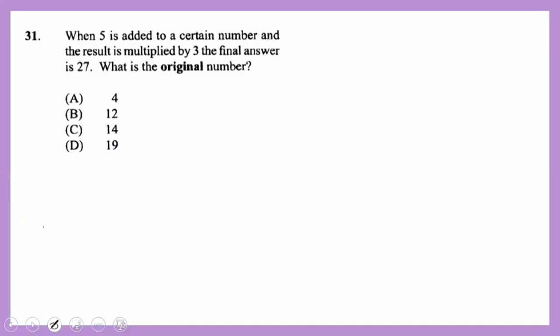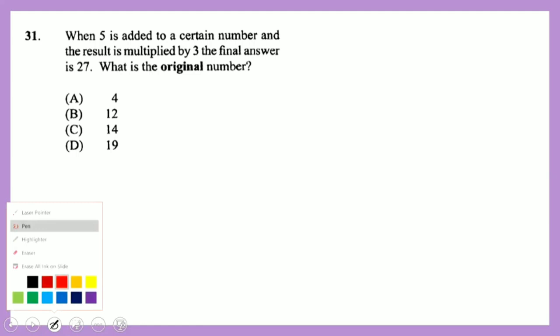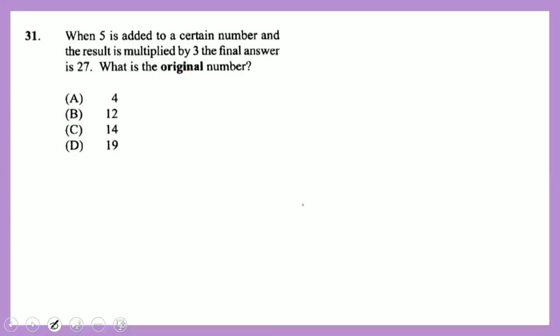Question 31: when five is added to a certain number and the result is multiplied by three, the final answer is 27. We write this using mathematical symbols: the certain number plus five, that result multiplied by three, equals 27. So we have (x + 5) × 3 = 27.